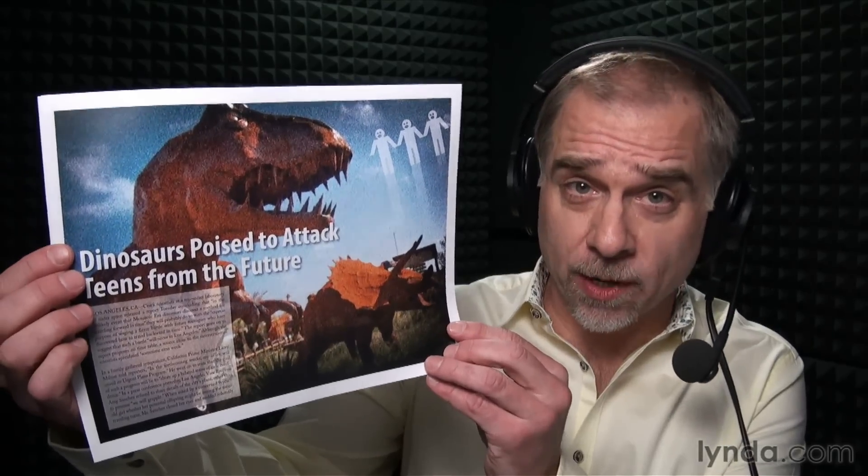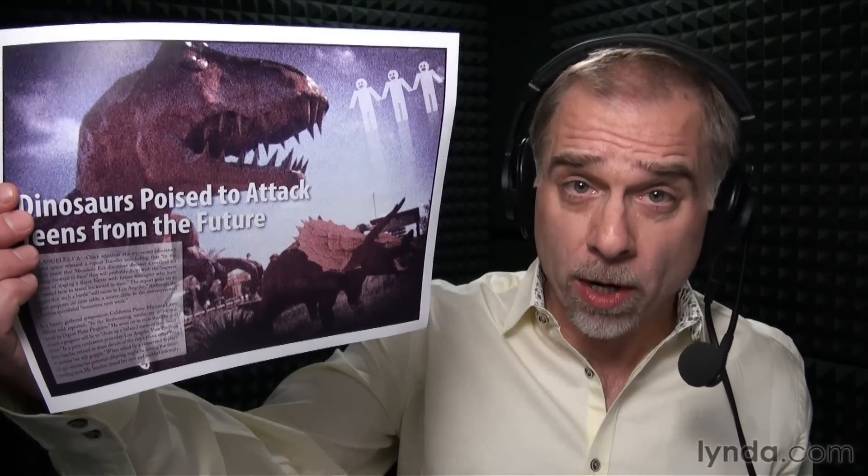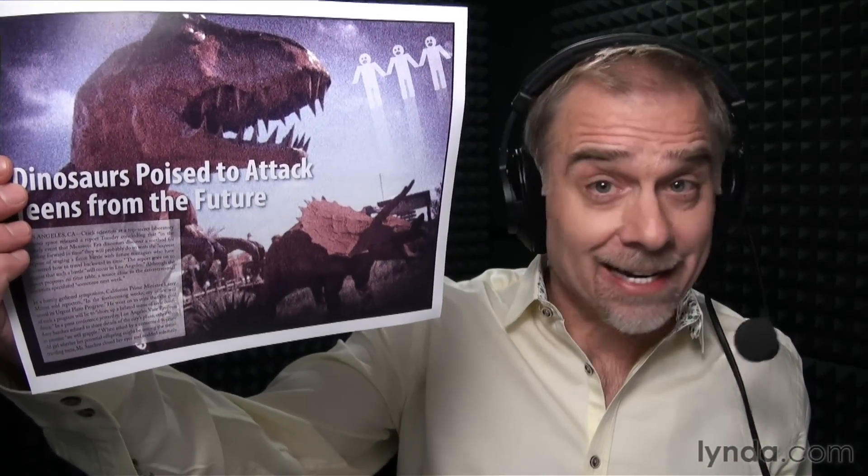Hey gang, this is Deke McClelland. Welcome to Deke's Techniques. This week I'm going to show you how to do the impossible. You know how it's impossible to flap your arms in order to make yourself fly? Well, it's equally impossible to take a photographic image that you've imported into Adobe Illustrator and give it a border. And yet that's exactly what we'll be doing in this movie.